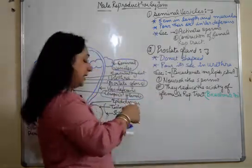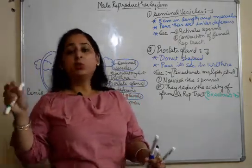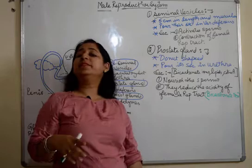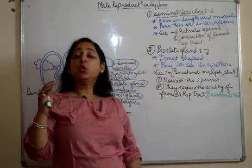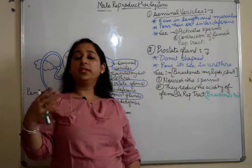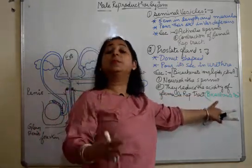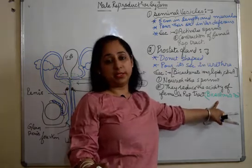I'll just explain it once again. The female reproductive tract from inside is very acidic. So when the semen is moving through it, the sperms will die in that acidity. So in order to reduce the acidity of the female reproductive tract, these bicarbonate ions reduce that acidity so that the sperms can survive in the female reproductive tract.